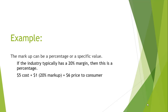Here is another example of a markup that can be a percentage or a specific value. When doing your research, if you find that the industry typically has a 20% margin, you would figure out what it costs to make the product. Say each good costs $5 to make. A 20% markup would be $1. So $5 cost plus $1 markup equals $6 — the price you would charge the consumer.